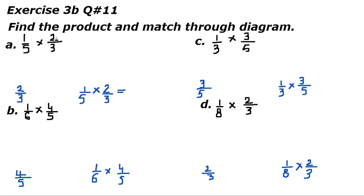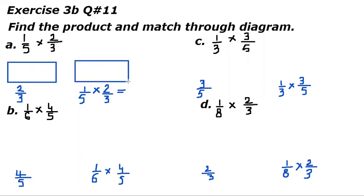First we will draw the second fraction which is two-thirds, and then we will draw one-fifth of two-thirds. For this we have to draw two boxes of the same size. Look at the denominator — it is three. We have to cut it into three parts but in a horizontal pattern.